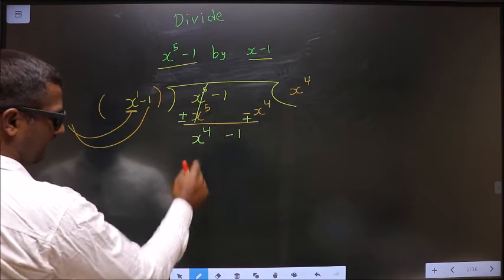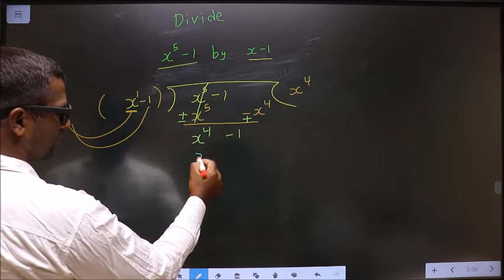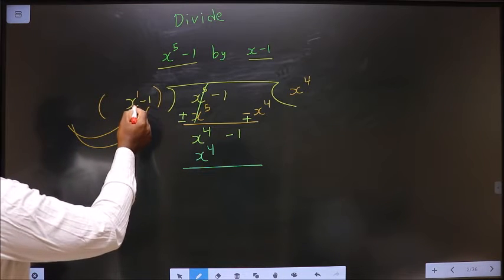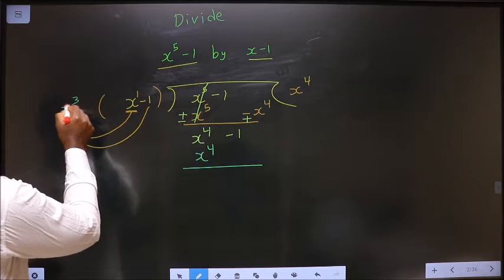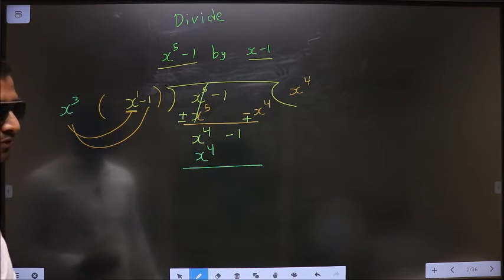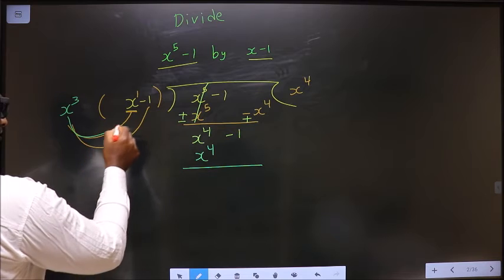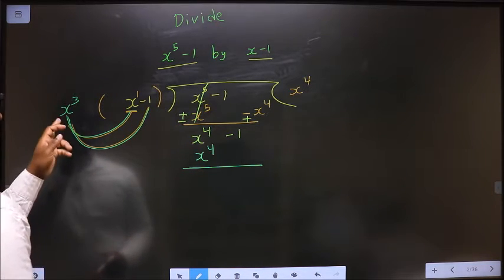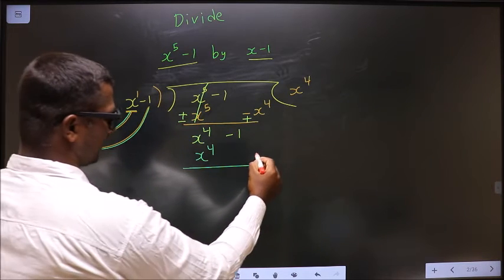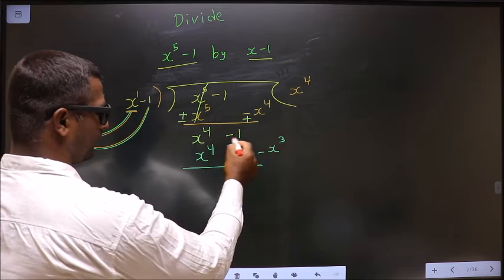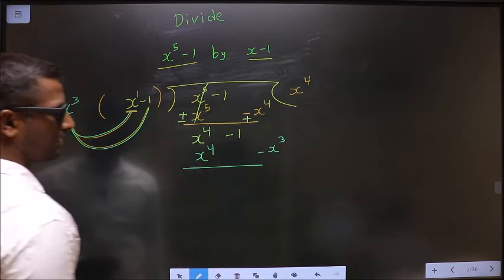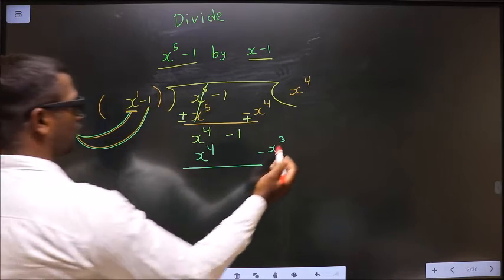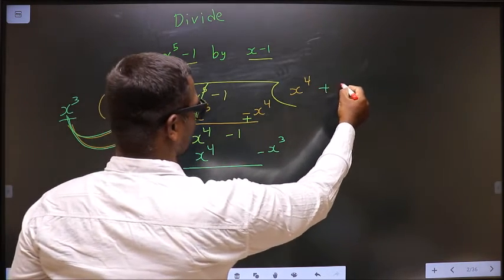Here it is x power 4, so below this also I should get x power 4. Here I have x power 1 — that should be multiplied with x power 3 to get x power 4. When multiplying x power 3 to this term, I should also multiply to the other term, minus 1. So x cube into minus 1 will be minus x cube. Here I do not have an x cube term, so I write it separately. This is your second term of the quotient: plus x cube.